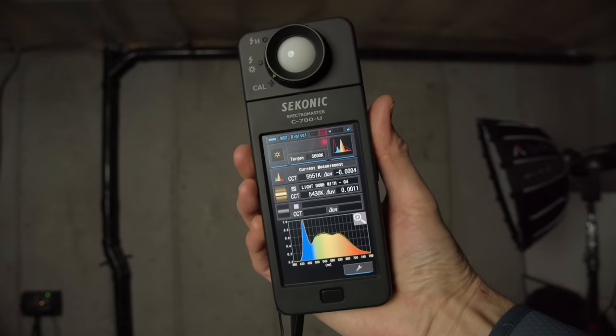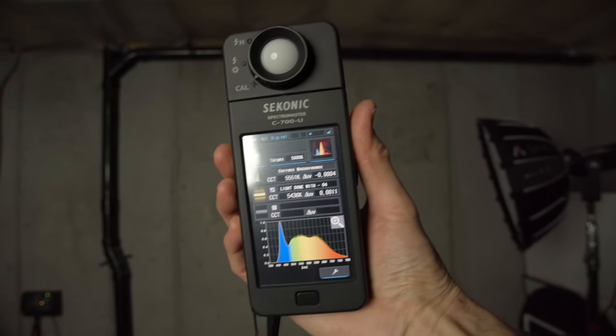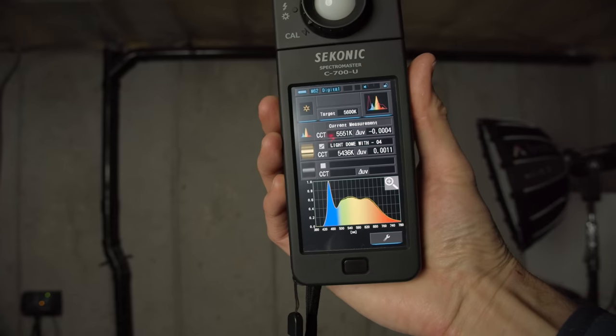One thing I was also curious about was whether or not the diffusion material imparts any sort of color. Using a spectrometer reading without the diffusion and with the diffusion, we saw basically identical results, so it's really not imparting any sort of color which is good. That means they're neutral in terms of overall diffusion and color casts.